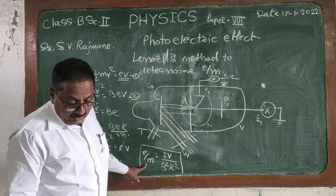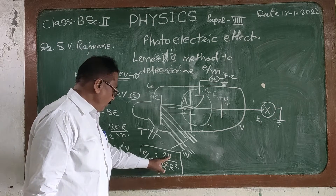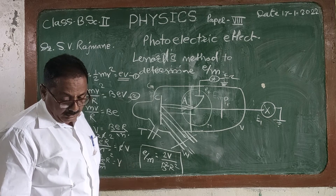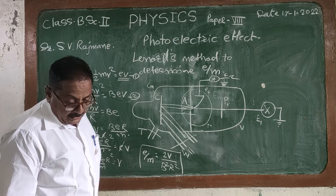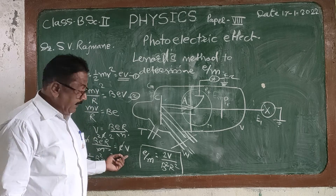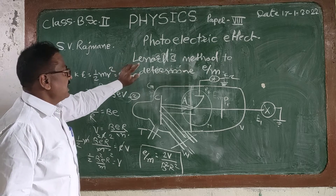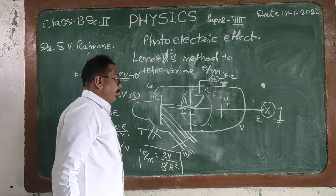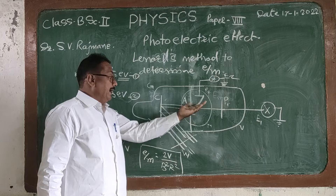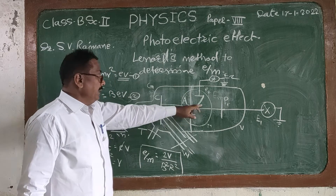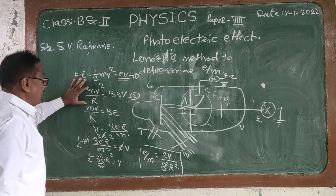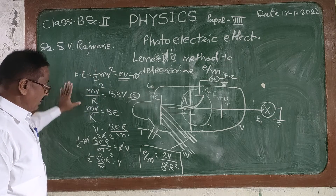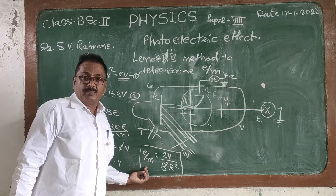From this equation, the charge-to-mass ratio of an electron depends on the values of φ, B, and r, and hence we can calculate its value. This is the result from Lenard's method. When we apply the magnetic field, the electron is deflected and moves in a curved orbit, giving us equation two: mv²/r = Bev, from which we derive the final result.